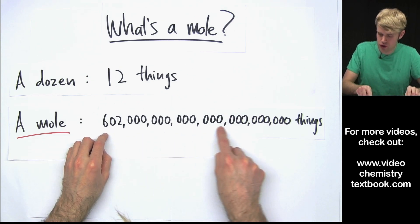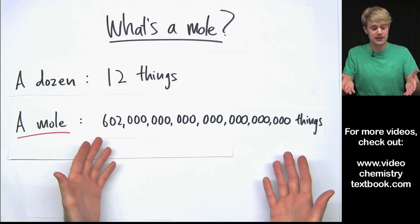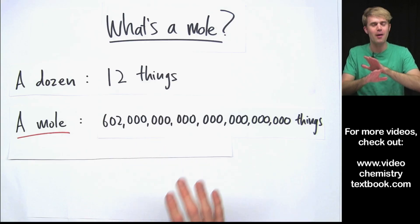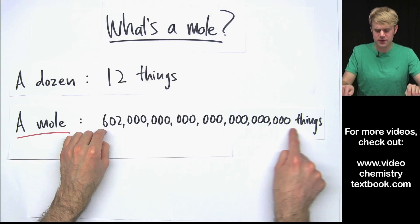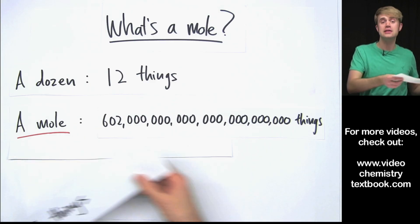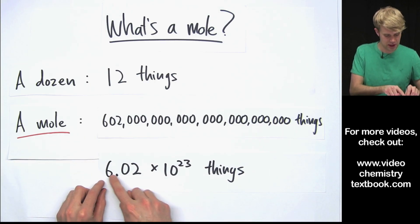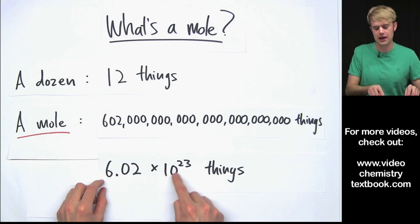Now this number 602 hexillion is really big. It's got all these zeros that are a big pain to write. So a lot of the times when we want to write this number, we abbreviate it in scientific notation as 6.02 times 10 to the 23rd.